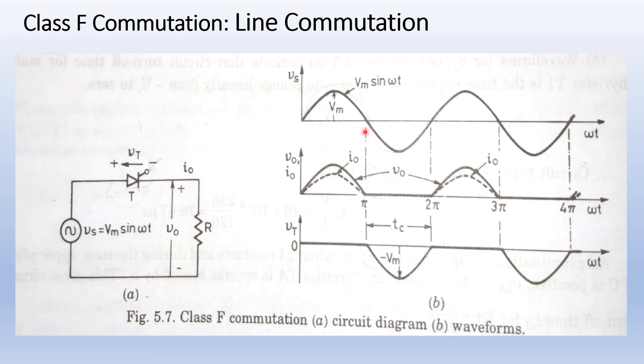From omega t equal to pi to 2pi, thyristor T is reverse biased for a period longer than the thyristor turnoff time Tq. Here, Tc is called the circuit turnoff time.